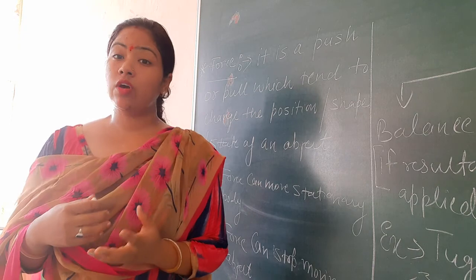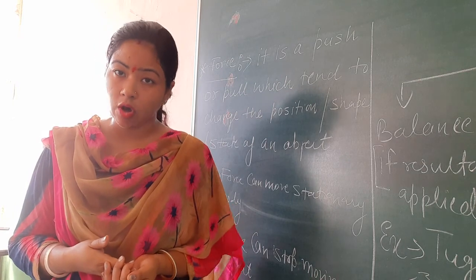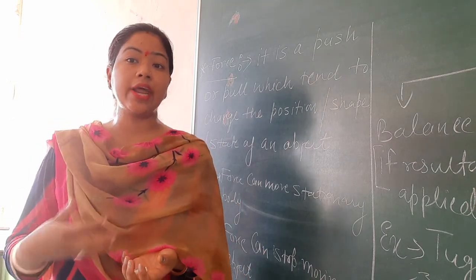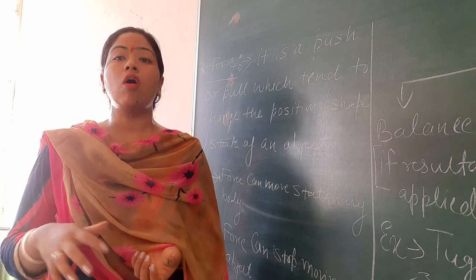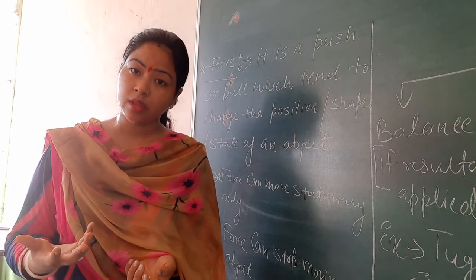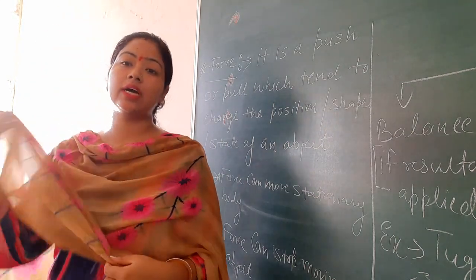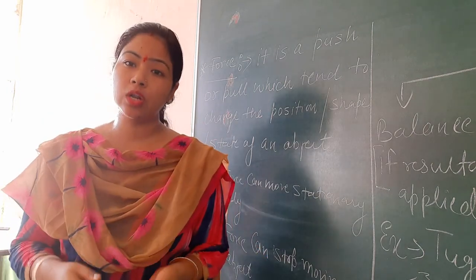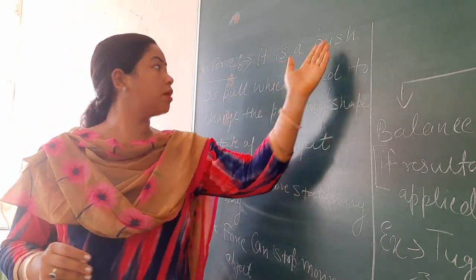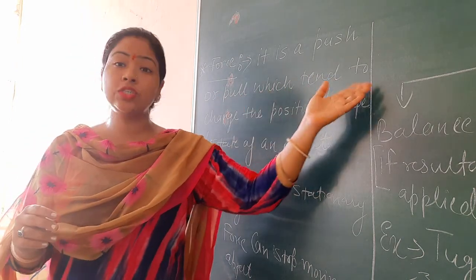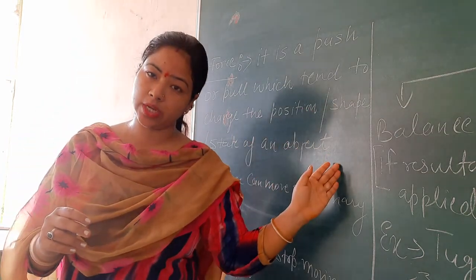So from there we got the definition: whenever we apply a push or pull on an object, it tends to change the position, configuration, state, or size of an object. And this is known as force. That is the combined effect of push or pull on an object. Force is a push or pull which tends to change — or tries to change — the position, shape, or state of an object.